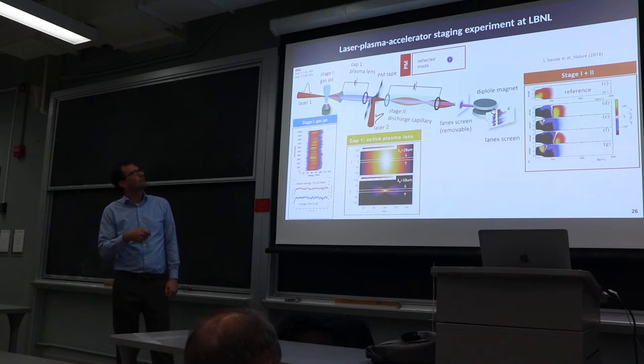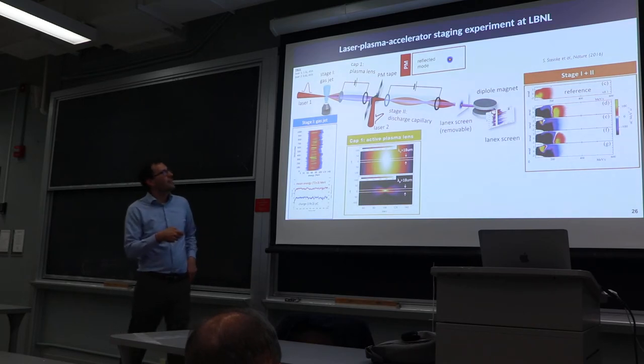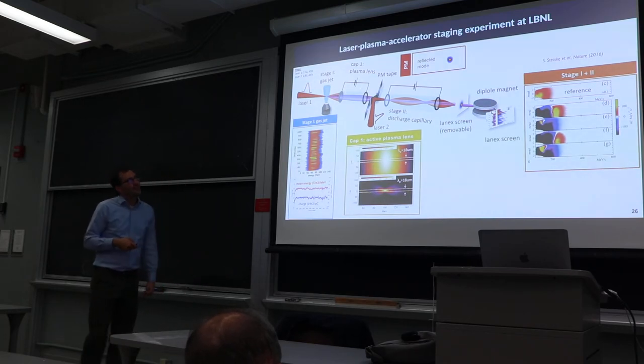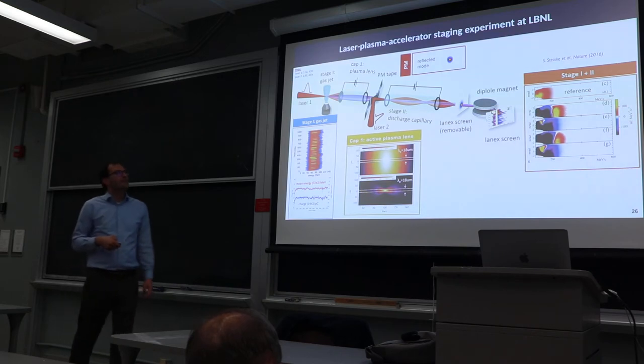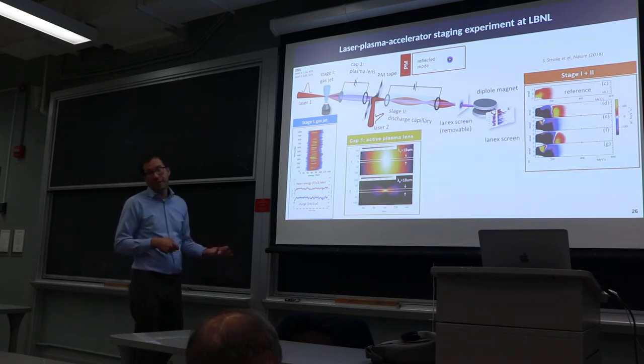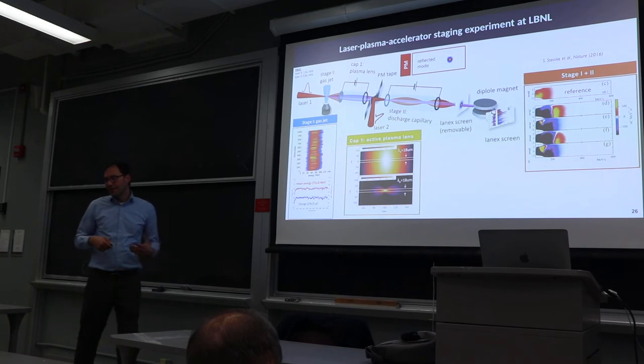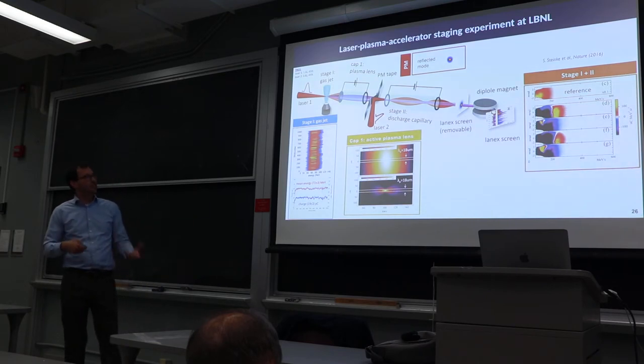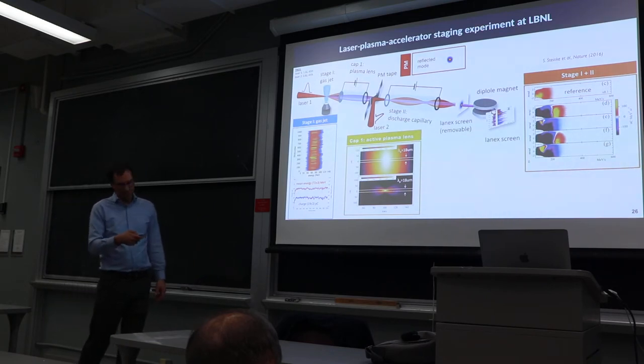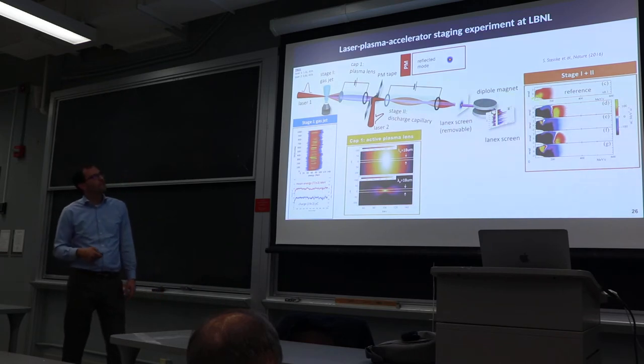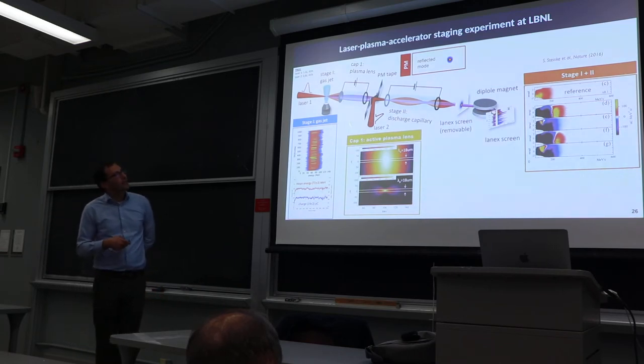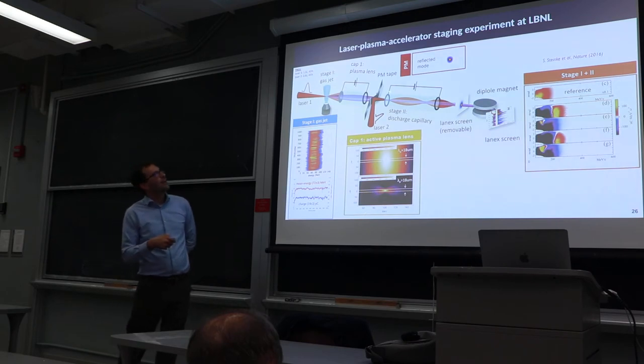This is a plasma lens technology, and you can actually get focusing fields of about a thousand tesla per meter, which is an order of magnitude larger than conventional focusing structures. That allows this whole system to be very compact. We focus the beam onto our second stage and come in with our second laser pulse to further accelerate it.